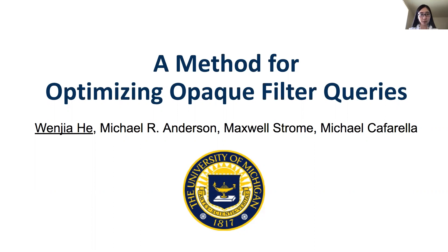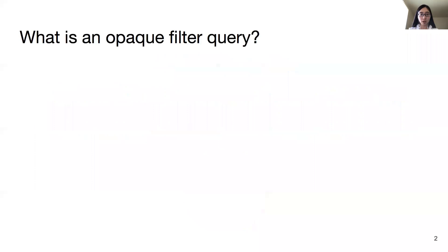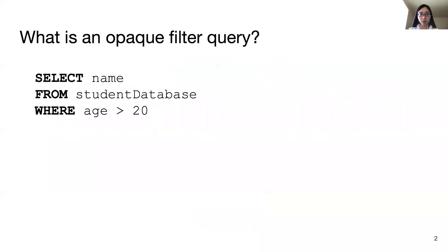First, what is a peak filter query? We are familiar with filter queries that select satisfying items. For example, when a user wants to select a student's name whose age is larger than 20, she can write a single filter query to complete the task.